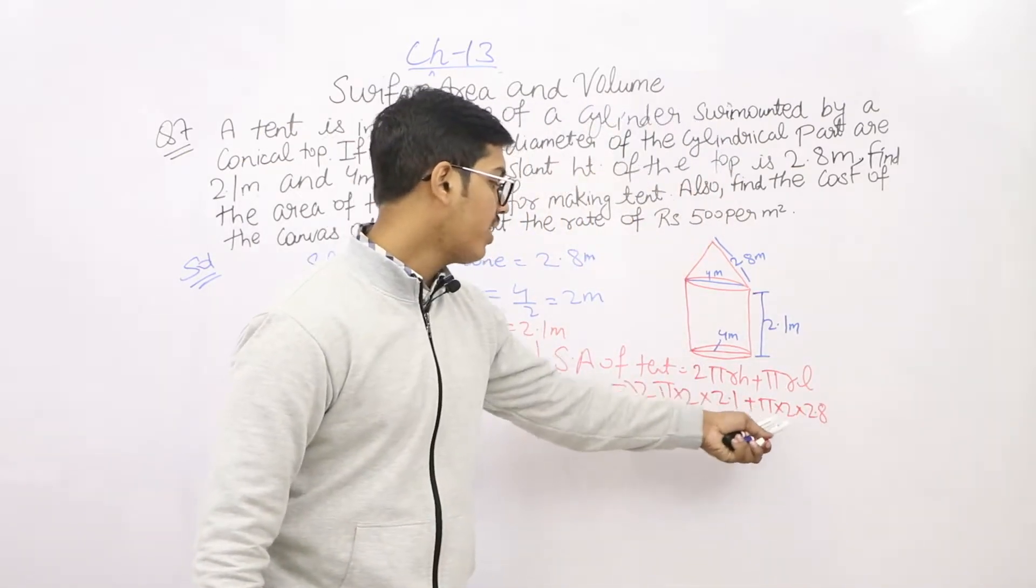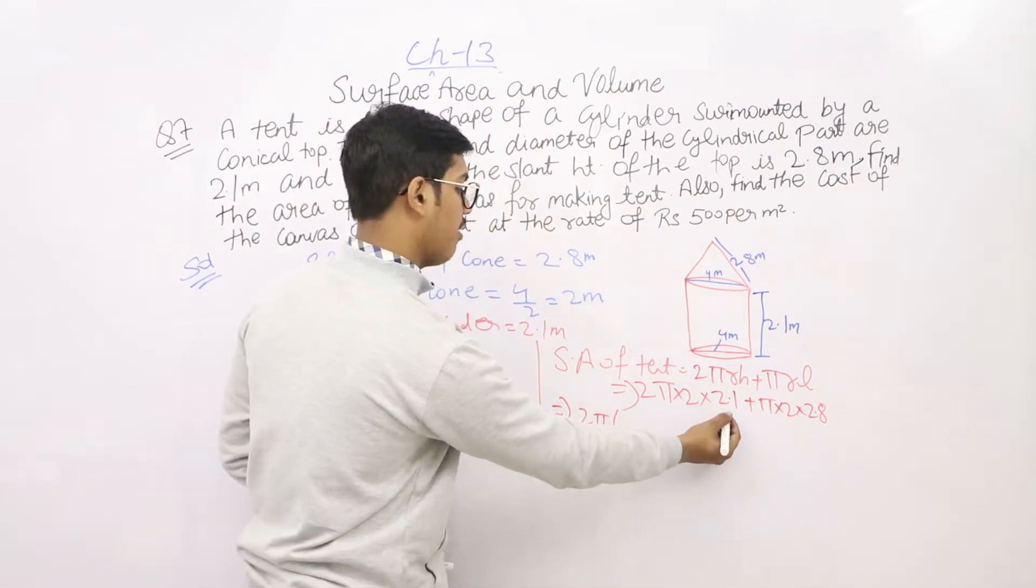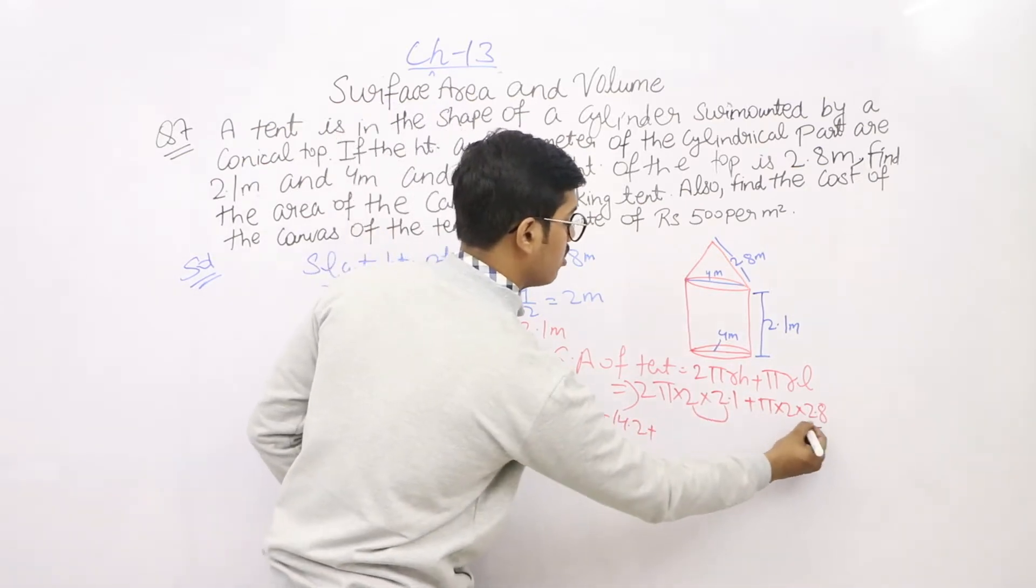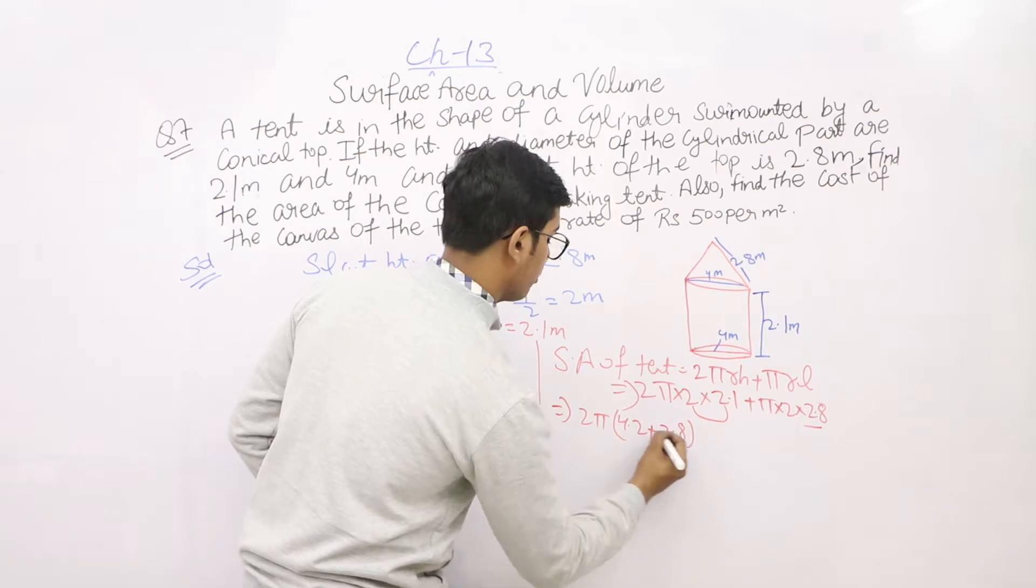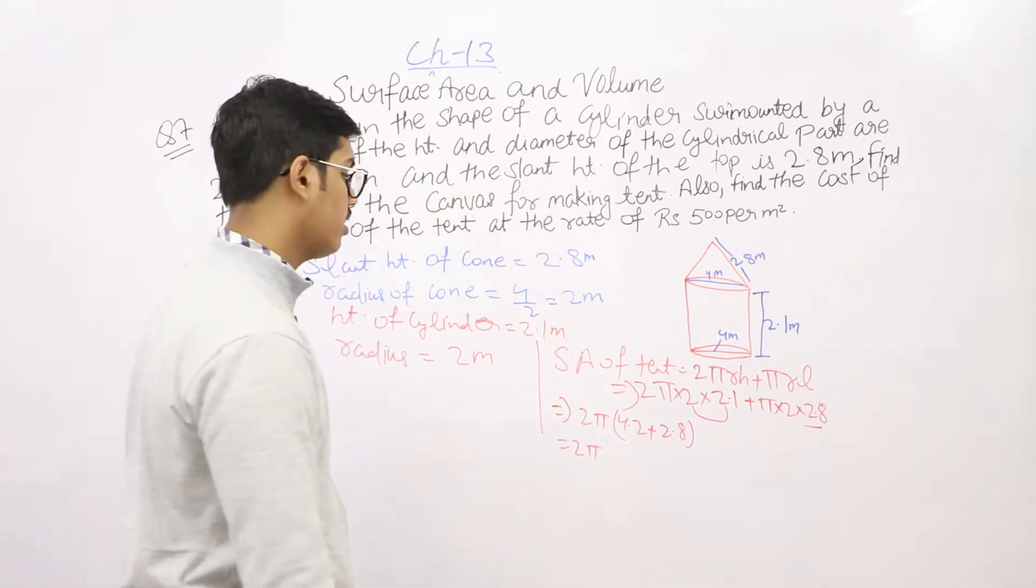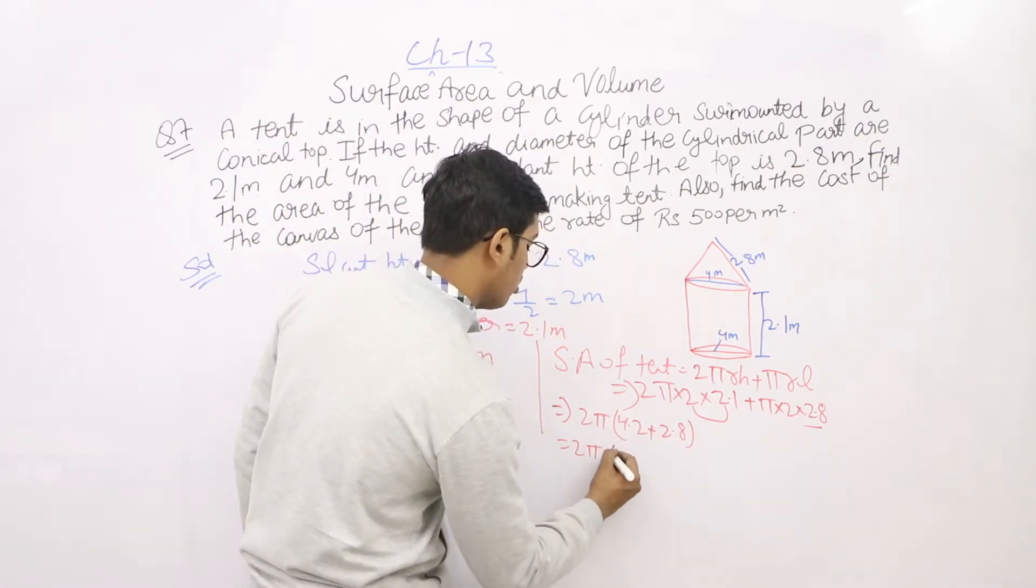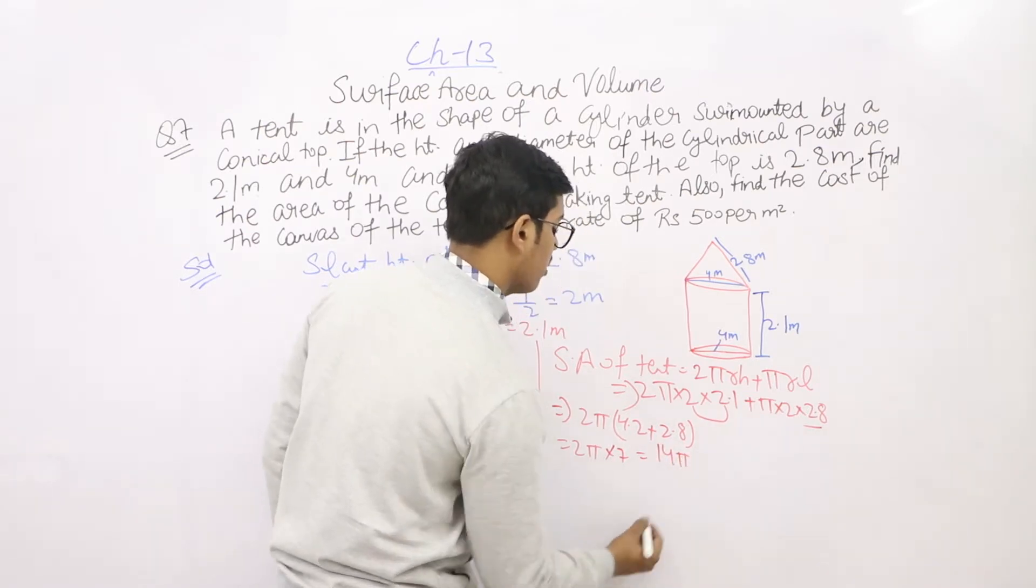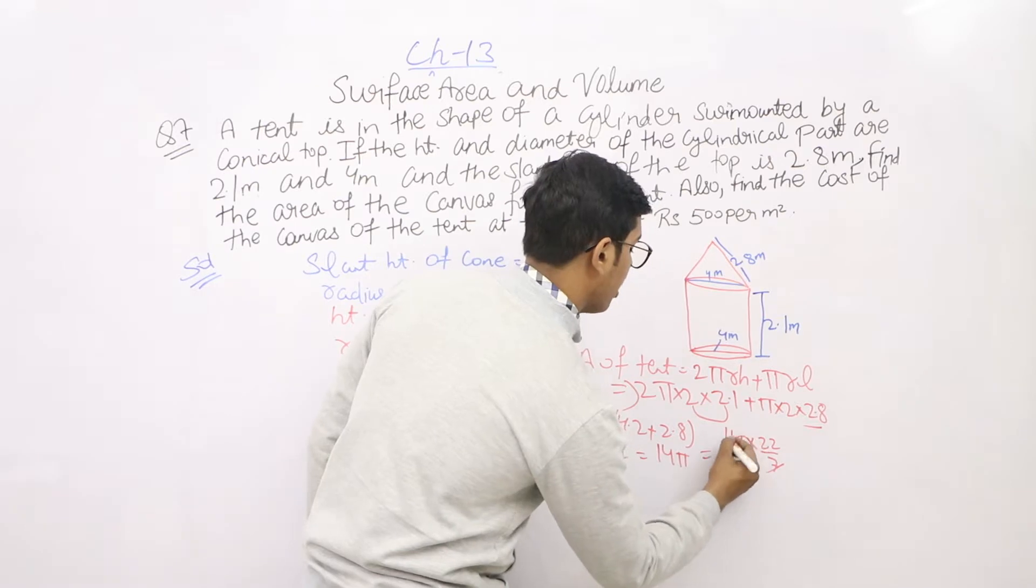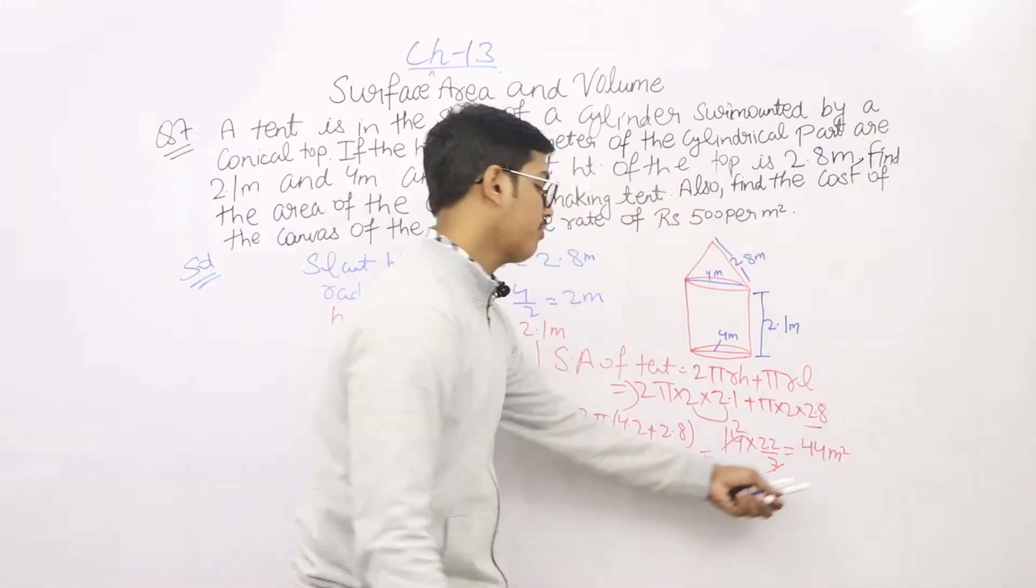In both terms we have π, so we take 2π common. After taking 2π common, we have 2.1 into 2 which is 4.2 plus 2.8. So 2π into 7, which is 7 into 7 equals 14π. Putting value of π: 14 into 22/7, which gives us 44 meter square. Surface area is 44 meter square.